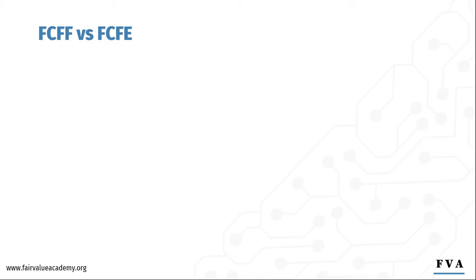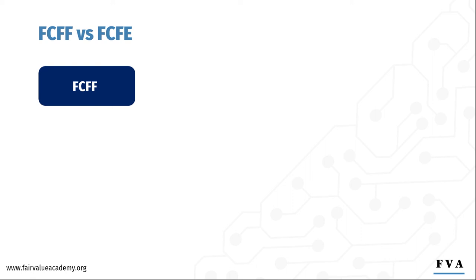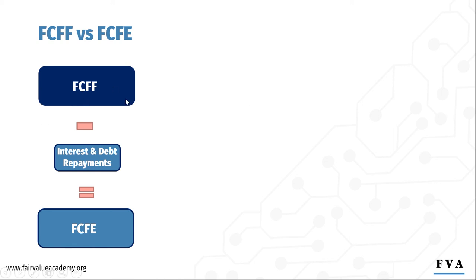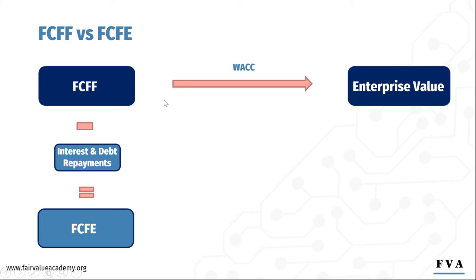Note how we purposely excluded interest and debt repayments from the free cash flow to the firm calculation. Hence, these cash flows can be claimed by both debt and equity holders. Debt holders will get the interest and the debt repayments, and the equity holders get whatever is left over. When we forecast free cash flows to the firm into perpetuity and then discount it by WACC, this will result in enterprise value, also known as firm value, total enterprise value, or EV or TEV.